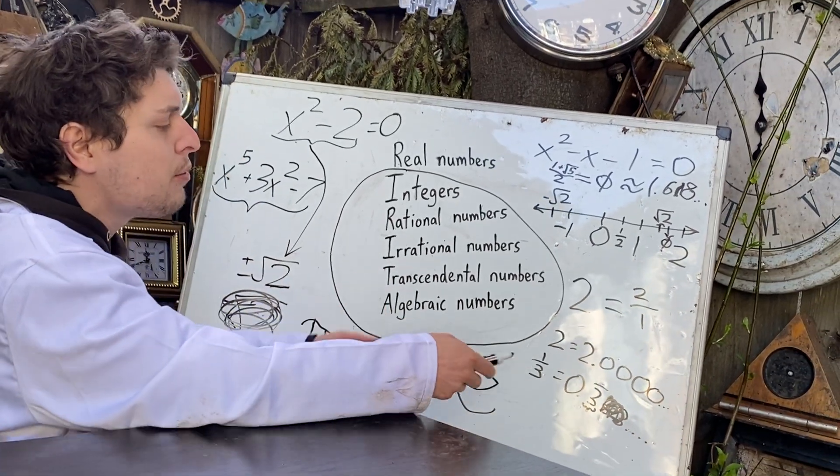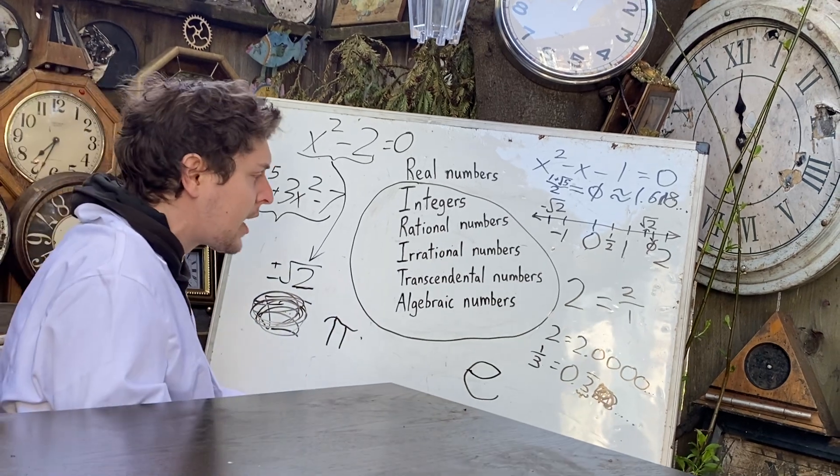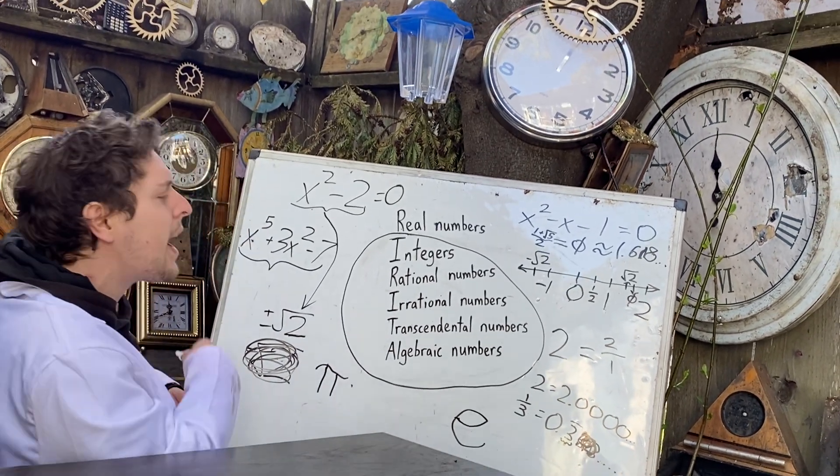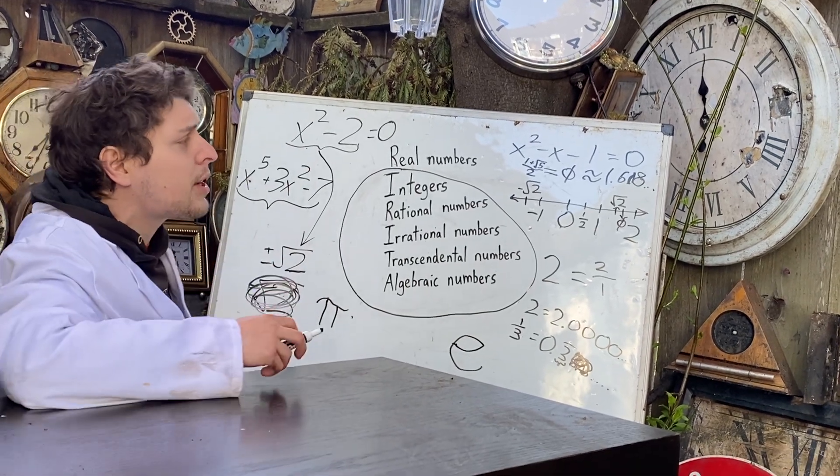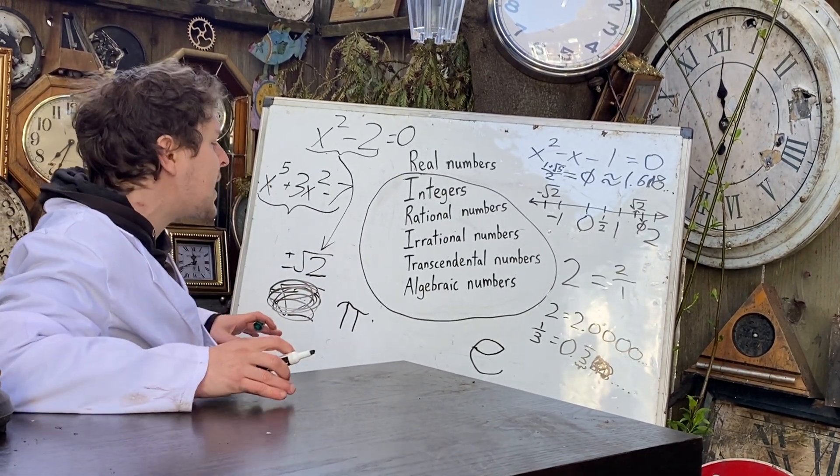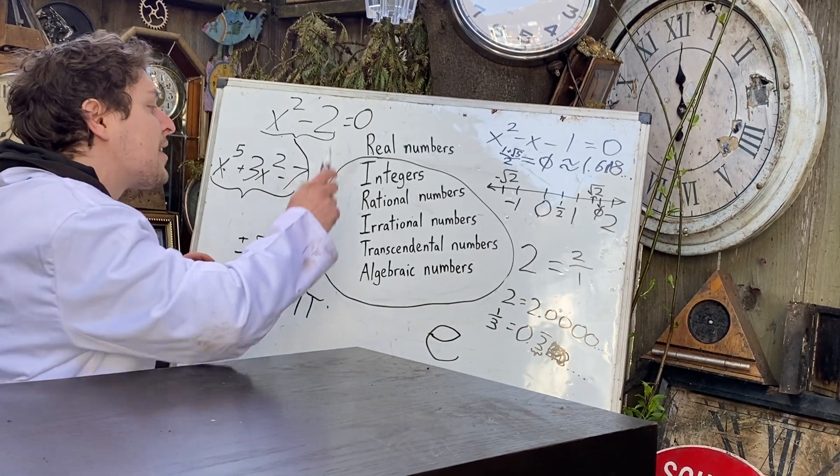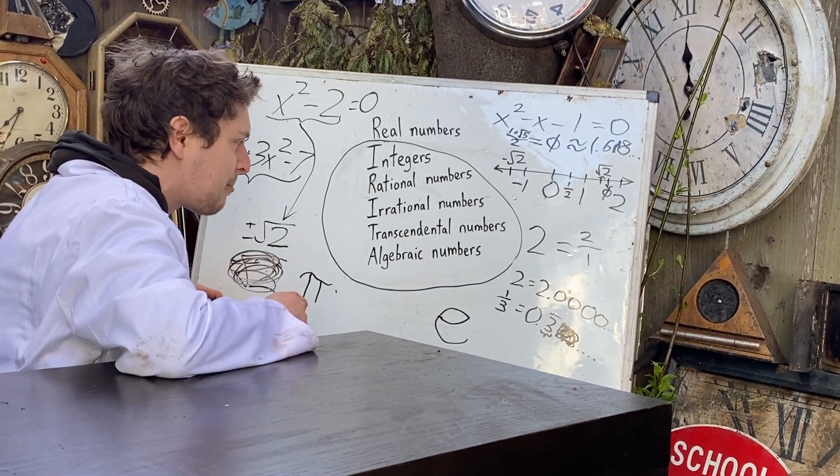Similarly, there's many cool ways to create the number e, which is about 2.7 and another great irrational number. But both of these, pi and e, are not the root of any of those typical polynomials, which makes them in this category known as transcendental numbers.